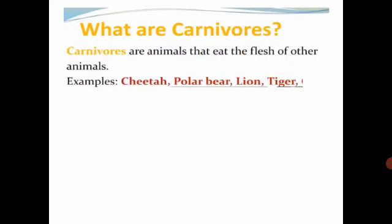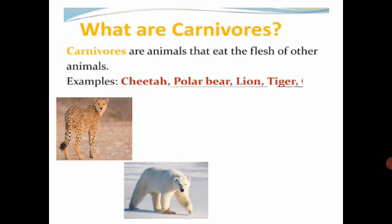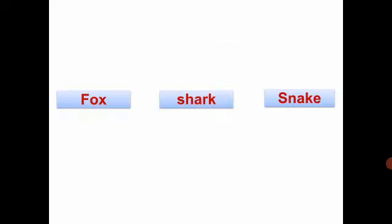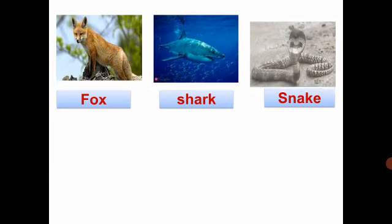What are carnivores? Carnivores are animals that eat the flesh of other animals. For example: Cheetah, Polar bear, Lion, Tiger. Some more examples of carnivores are Fox, Shark, and Snake.